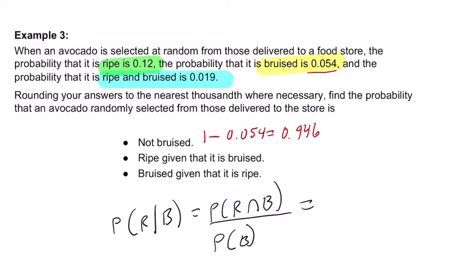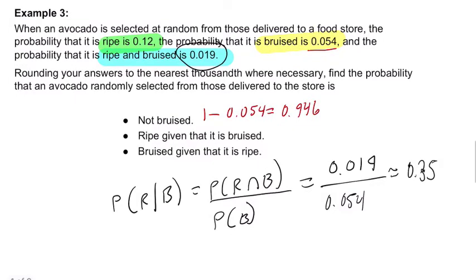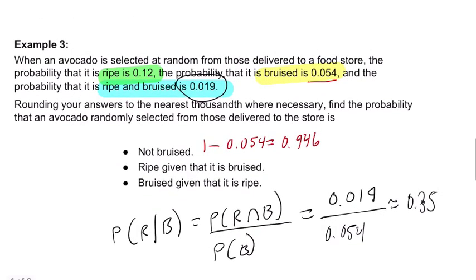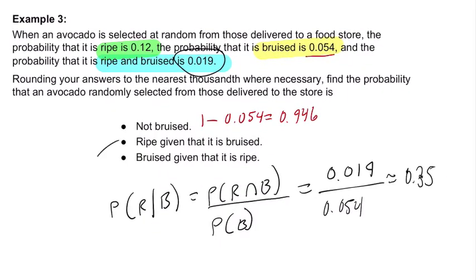Ripe and bruised is 0.019, and the probability of it being bruised is 0.054. If we divide those two, we get about 35%. So 35%—does that match ripe given bruised? Okay, that was ripe given bruised.